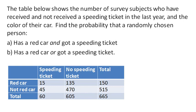Here we have a table showing the number of survey subjects who have received and not received a speeding ticket in the last year, and the color of their car. We're going to find the probability that if we were to choose one of these people at random, that the person has a red car and got a speeding ticket, and then secondly, has a red car or got a speeding ticket.